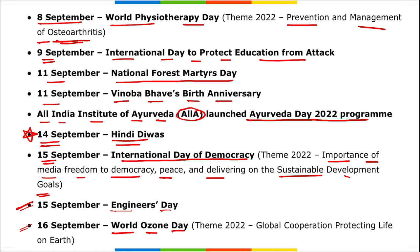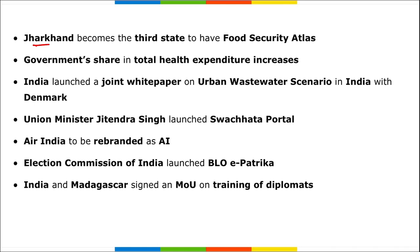On 15th September, Indigenous Day is observed. On 16th September, World Ozone Day is observed with the theme 'Global Cooperation: Protecting Life and Earth.' Remember this — with increasing global warming and atmospheric changes, a question about Ozone Day (16th September) could easily be asked. Next — Jharkhand became the third state to have a Food Security Atlas.